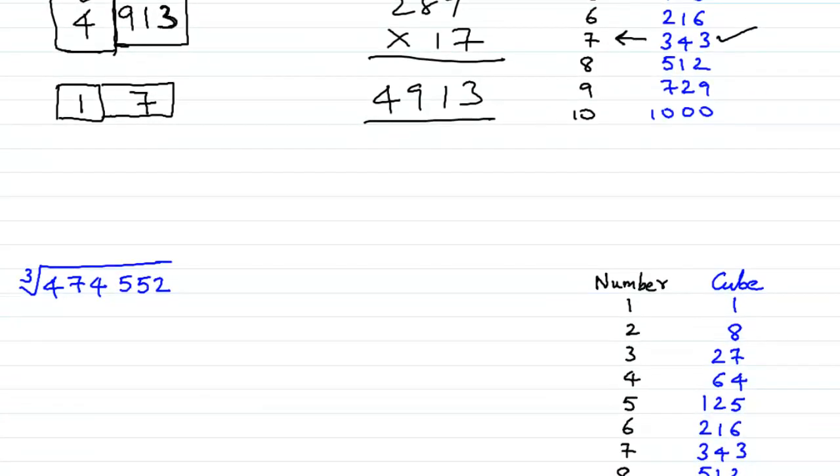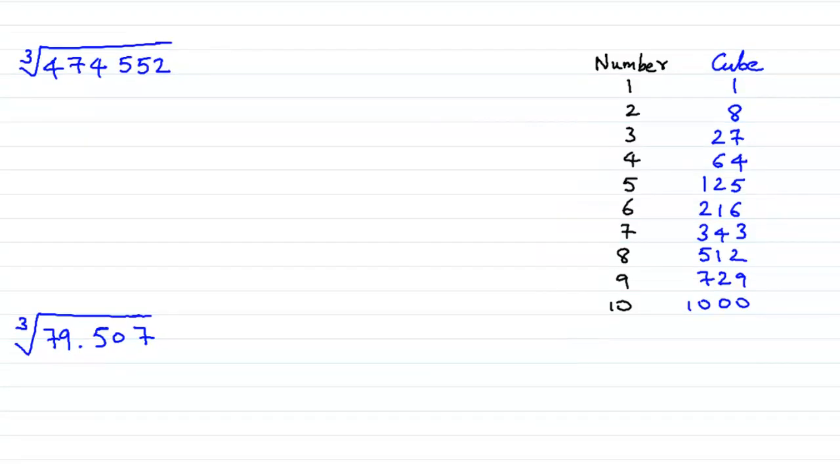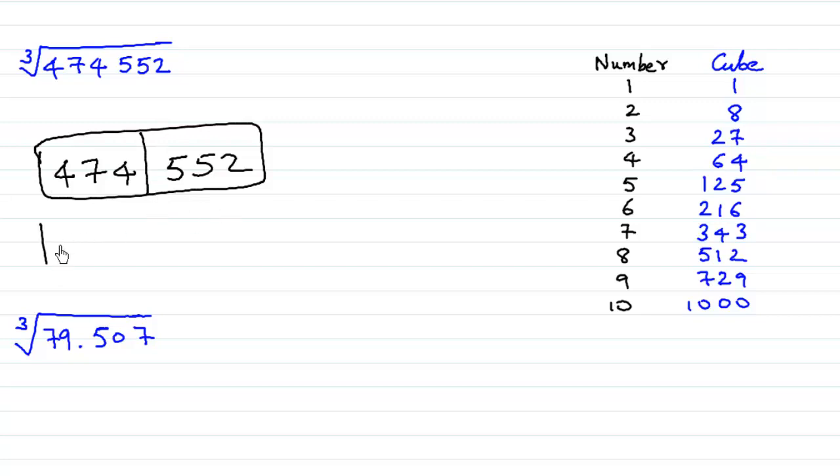So let us again learn this method with another example. What is the cube root of 474552? We shall be writing this 474552 and we shall be making groups of 3. Groups of 3 because this time we have a cube root. So this tells us that again our answer will be a 2 digit number.